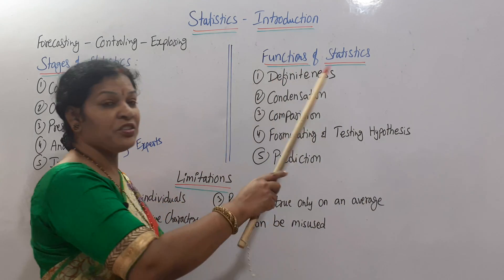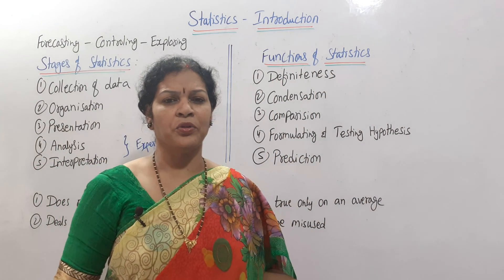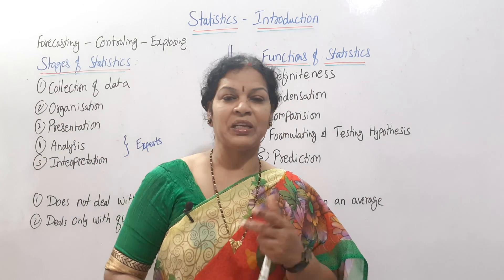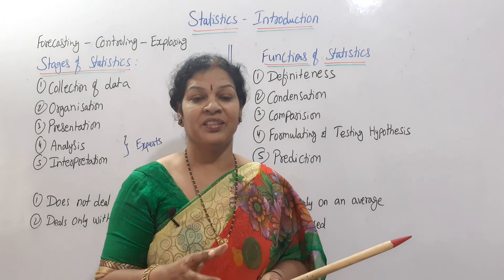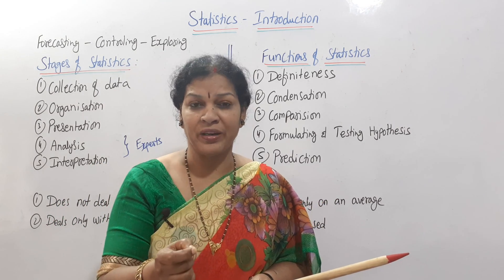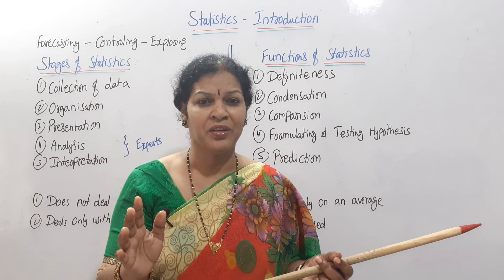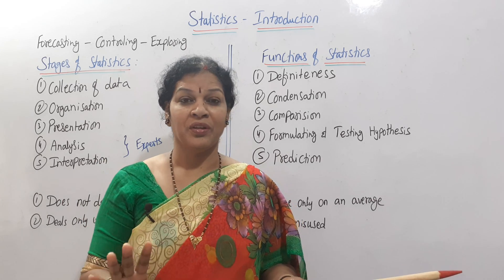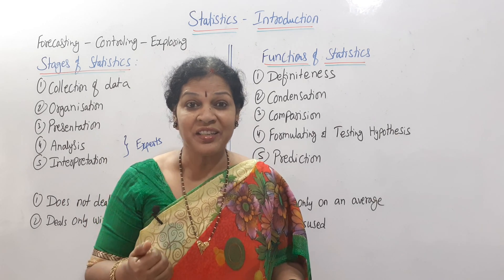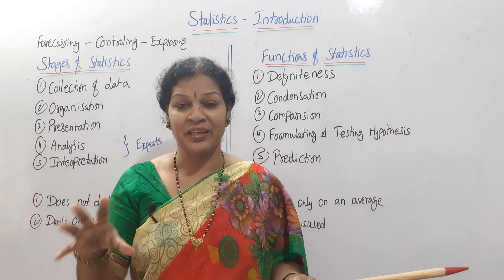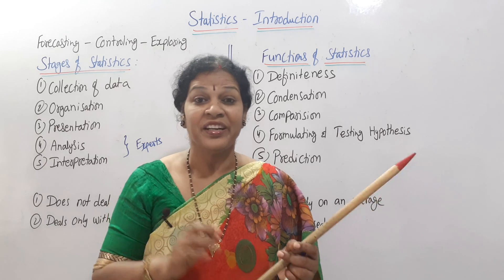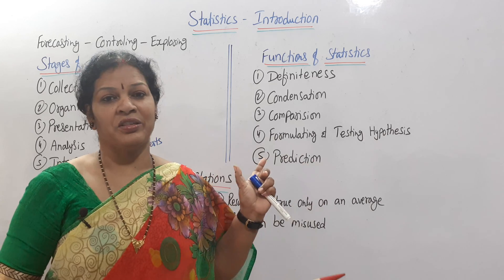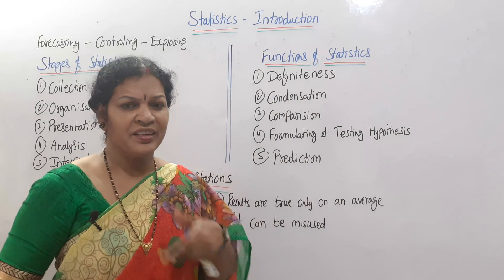Next we will see the functions of statistics. The first and main function is definiteness. Whenever we calculate something or present something, that 100% accuracy — that definiteness — you will find it. You will not find any vague or fictitious information. Because we have collected the data, and through that data only we go for organizing, analyzing, and interpretation. That is why definiteness is one of the main functions of statistics.